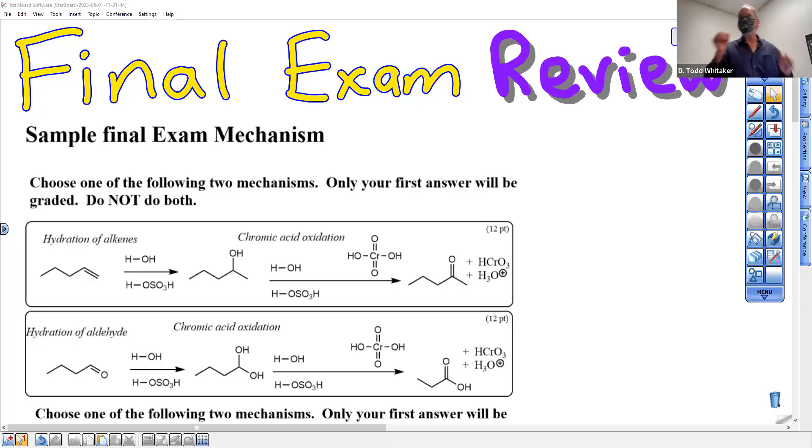All right everybody, final exam review. On your final, half the exam is mechanisms. They're laid out exactly like this. There's a reason I chose this pair of mechanisms because it's the only time you're forced to do a specific mechanism. When these are the two choices, you will be forced to do a chromic acid oxidation on your final exam. You will not be forced to do any other mechanism.